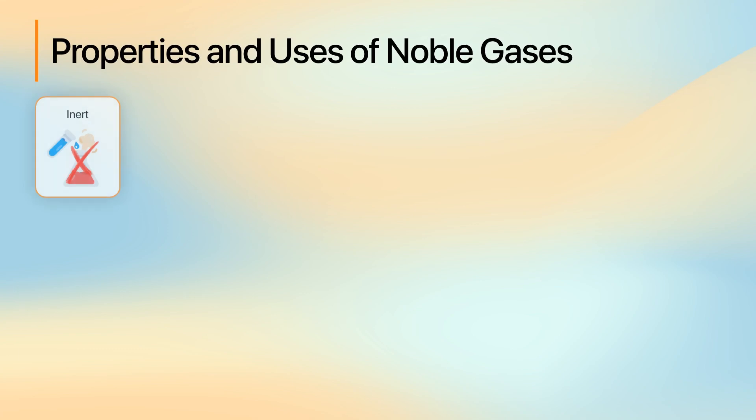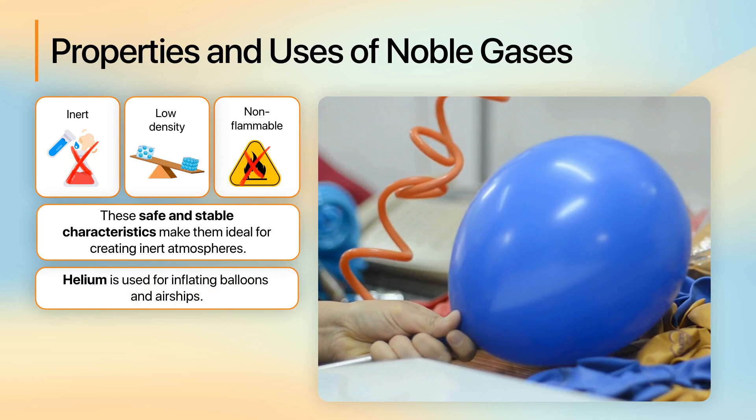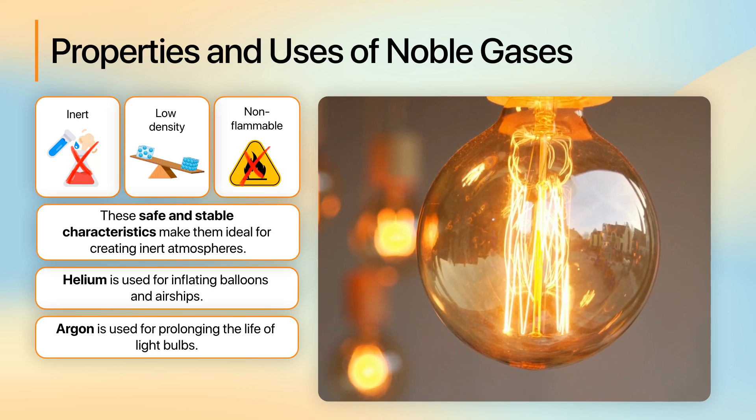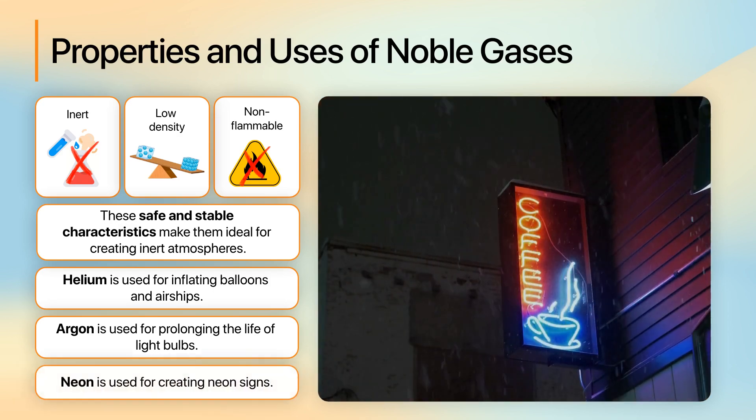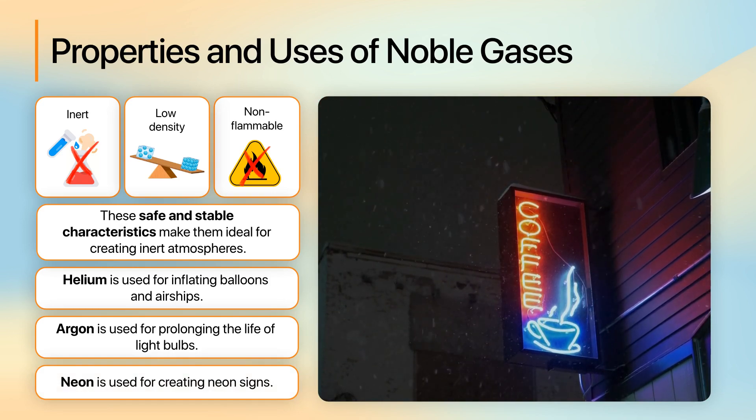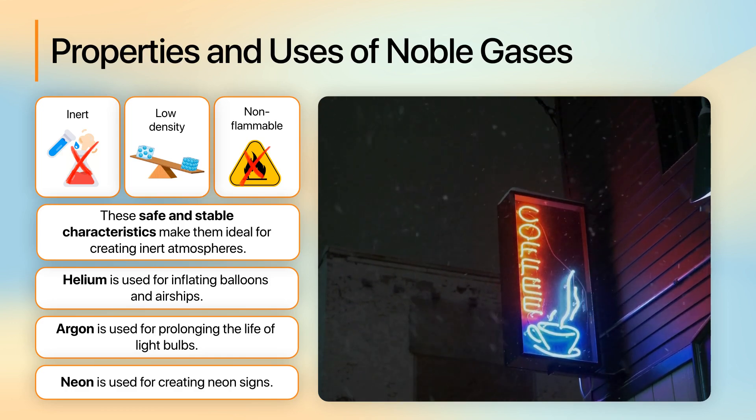The inertness, low density, and non-flammability of noble gases are key properties that dictate their various uses. These stable and safe characteristics make them ideal for creating inert atmospheres. Helium is used for inflating balloons and airships. Argon is used for prolonging the life of light bulbs. And neon is used for creating striking neon signs. Understanding these properties allows us to appreciate why noble gases are so valuable in different technological and everyday applications.